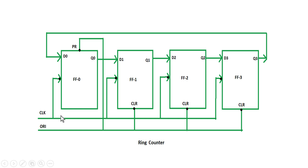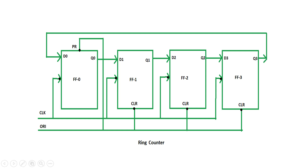Similarly, on the next negative edge of the clock, Q1 will be passed to Q2, and Q1 will become 0. Q0 will get its original reset value, and Q1, Q2, Q3 will remain 0. In this way it keeps on rotating and giving us the one-hot encoded value, acting as a one-hot counter.